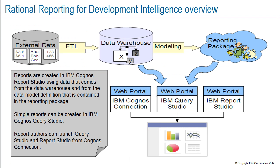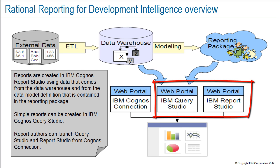This diagram shows an overview of Rational Reporting for Development Intelligence, or RRDI. All reports are stored and displayed in Cognos Connection, but the report viewer will most likely view reports through the Rational CLM user interface. RRDI report authors will use Cognos Connection to see reports and dashboards, to launch tools for report authoring, and to access Cognos and Rational help content. I'll focus on Cognos Query Studio and Cognos Report Studio report authoring tools, since they will probably be the most common for authoring CLM reports.